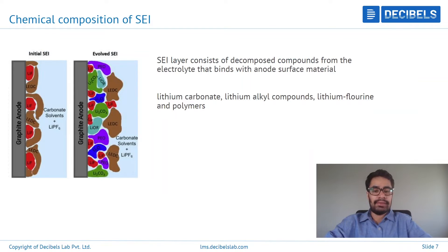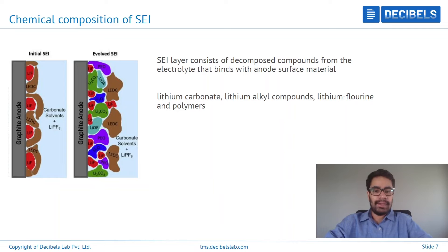What exactly are the chemical compositions of SEI? It is composed of many decomposed products from the electrolyte itself, mixed with anode surface material and lithium ions. Starting with very simple products such as lithium fluoride and LEDC, which is lithium ethylene dicarbonate, it can then produce much more complex carbonate compounds. The main composing materials are lithium carbonate, alkyl compounds, and fluoride compounds.